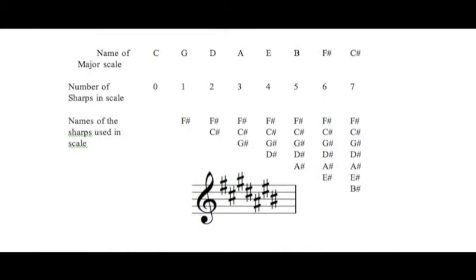A has 3: F, C and G. E has 4: F, C, G, D. B has 5: F, C, G, D, A.